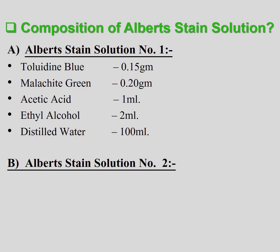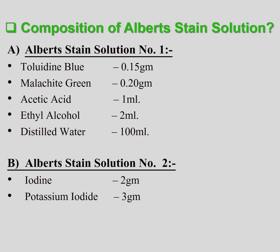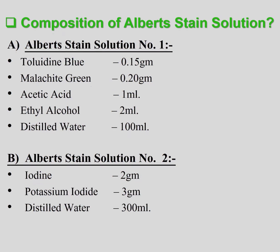Albert's Stained Solution No. 2: Iodine 2 gram, Potassium Iodide 3 gram, Distilled Water 300 ml.